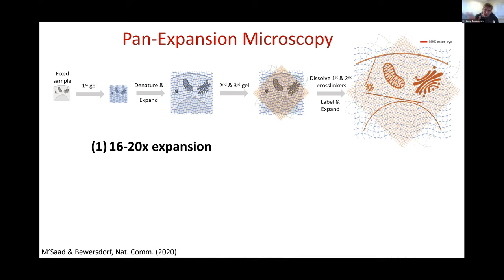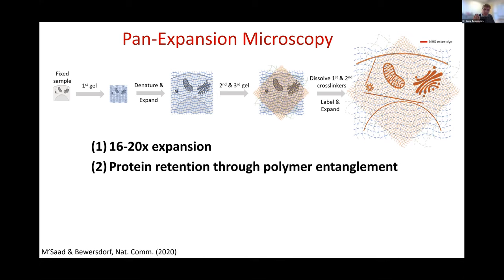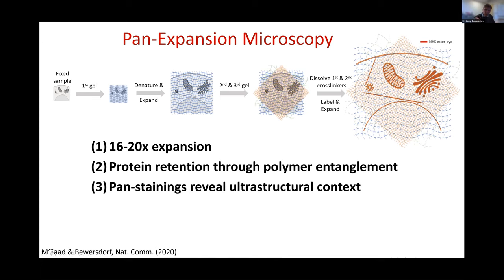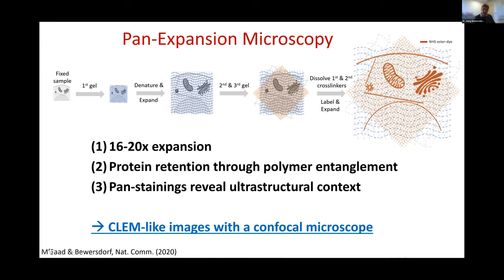We have retained our protein content throughout this process by entangling proteins in a polymeric network — a development enabled by my graduate student Hansine Saad in her PhD thesis. We can then label proteins of interest with antibodies, and on top of that, add what we call a pan-staining, where we label the whole proteome with an unspecific label like an NHS ester that binds to all primary amines. As I hope to convince you, this provides CLEM-like images obtained just with a confocal microscope in one imaging session.